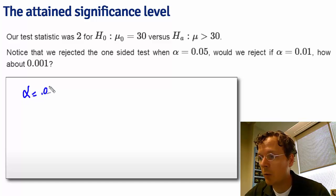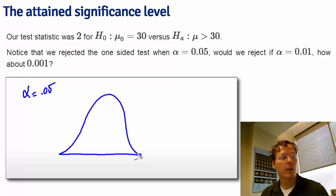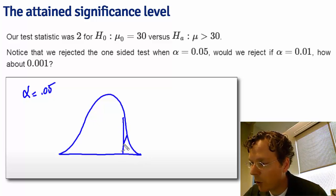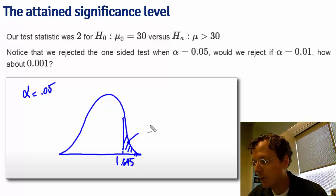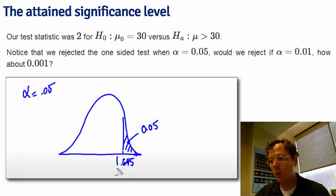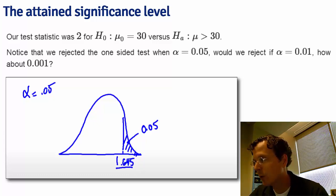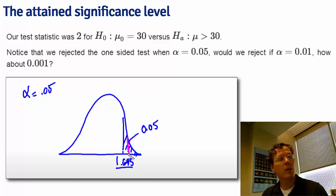Now, if we were to set alpha equal to 0.05, we know that we would reject because we know the rejection region. The quantile that we would reject for at 0.05, so that that area was 0.05, would be 1.645. Since we know 2 lies above 1.645, we would reject.